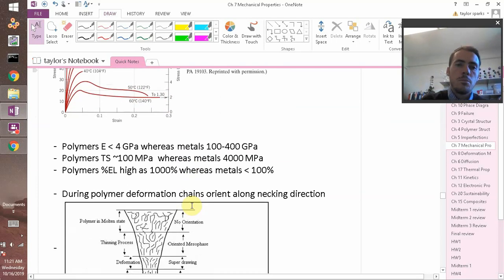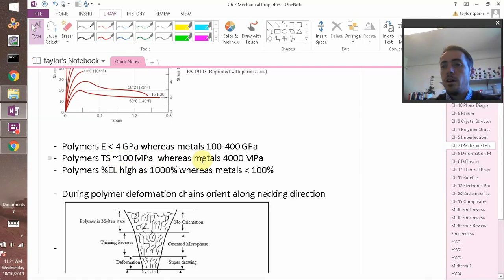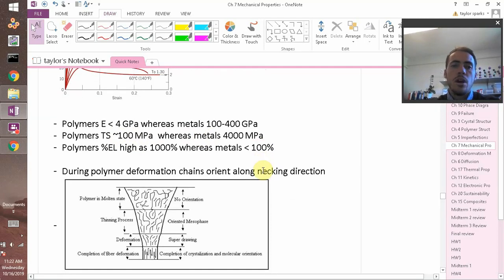So some typical values. Remember that your modulus is something like less than four or five gigapascals for a polymer, whereas metals are 100 to 400 gigapascals typically. The tensile strength of polymers is much lower. Most polymers are not strong. It's something like maybe a hundred megapascals where metals might be four gigapascals. And then the elongation, in some polymers, you can achieve a thousand percent elongation, whereas metals, it's typically less than a hundred percent elongation before they break.